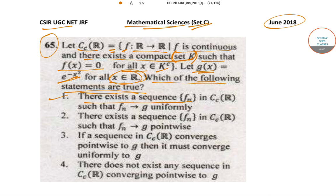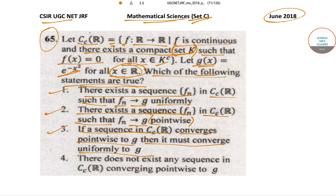Option 1: there exists a sequence Fn in CCR such that Fn converges to G uniformly. Option 2: there exists a sequence Fn in CCR such that Fn converges to G pointwise. Option 3: if a sequence in CCR converges pointwise to G then it must converge uniformly to G. Option 4: there does not exist any sequence in CCR which converges pointwise to G.